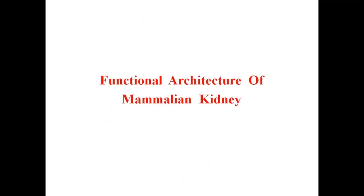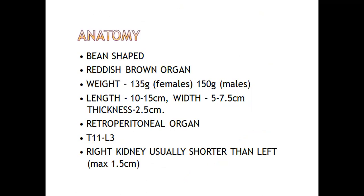Now, what is the functional architecture of the mammalian kidney? We need to understand the kidney structure — if we understand the kidney structure, the excretory process will become very clear. If we talk about the anatomy, the kidney is a bean shape, reddish brown color. Its weight is 135 grams in females and approximately 150 grams in males.